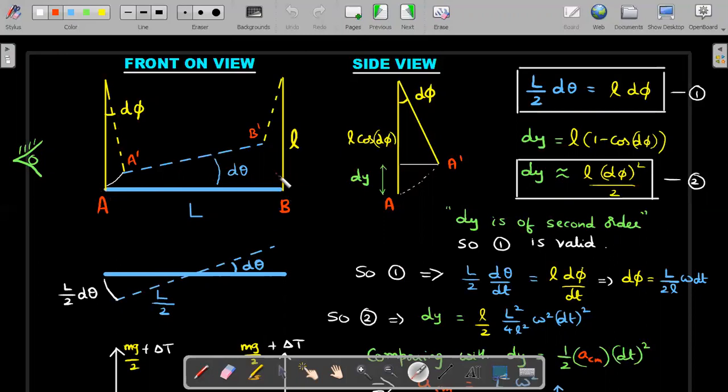Same thing with capital B, the B is supposed to become B prime by having two displacements. One is into the board. Another one is vertically upwards. So we expect this entire rod, if it has to stay horizontal, then each and every point of this rod will have a vertically upward displacement. So even center of mass moves up by the same Y displacement as compared to A prime and B prime.